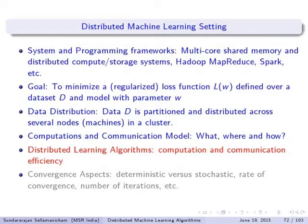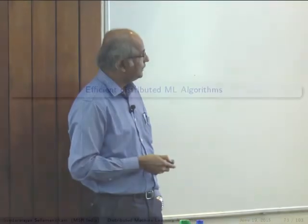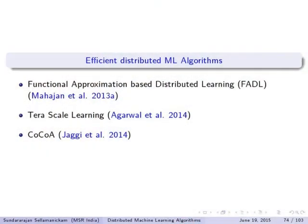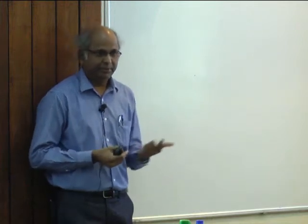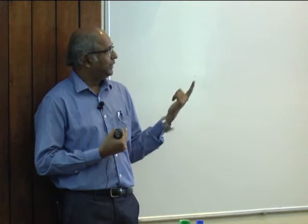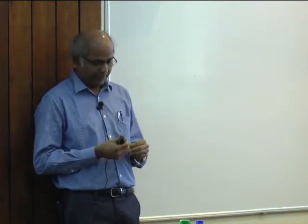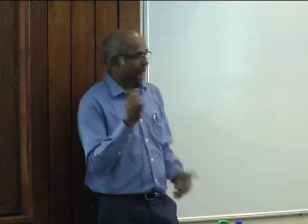Whatever is highlighted in blue we have already covered. Let's get into the last part: efficient distributed machine learning algorithms. We will look at three algorithms. These are not the only methods in the literature — there are many different methods. What I've chosen is one particular case of instance-wise partitioning and some of the popular methods. A similar situation exists in the feature-wise partitioning scenario, which I am not covering today due to lack of time, but those references are given at the end of the PDF.